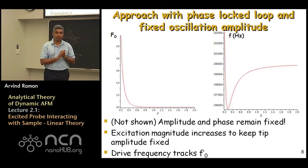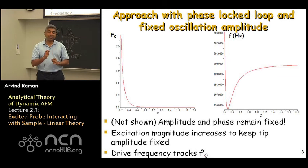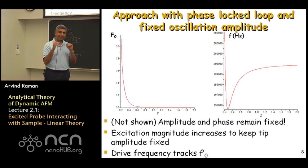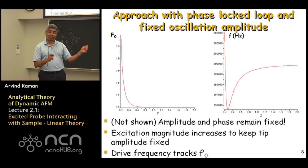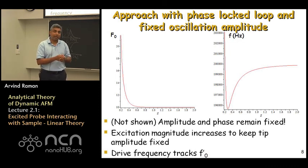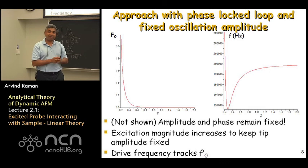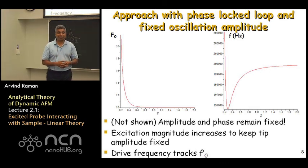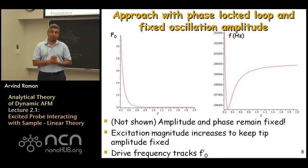In this third thought experiment, as one approaches the sample, the oscillation amplitude remains constant because you increase the excitation magnitude to compensate, while the phase-locked loop keeps the drive frequency equal to the modified natural frequency f0 prime so you are always at 90-degree phase lag. The drive frequency first decreases then increases as shown on the right. The drive magnitude on the left must increase to match the increased dissipation due to tip-sample interaction forces C_Ts. This thought experiment is actually the foundation of frequency modulation atomic force microscopy, which we will discuss in the next class.